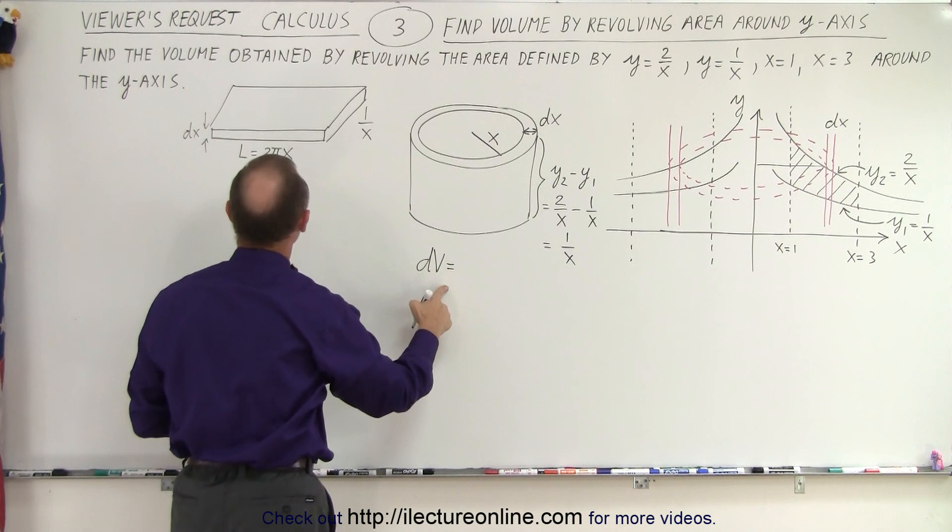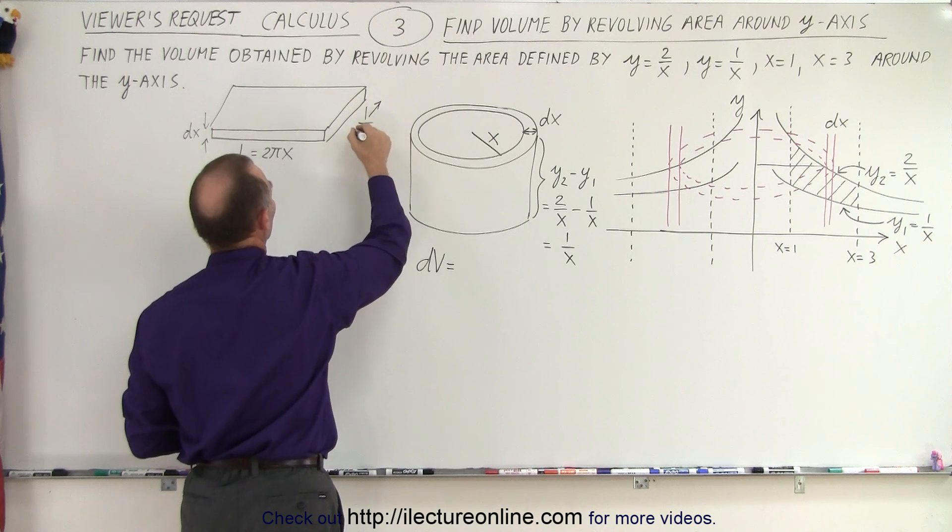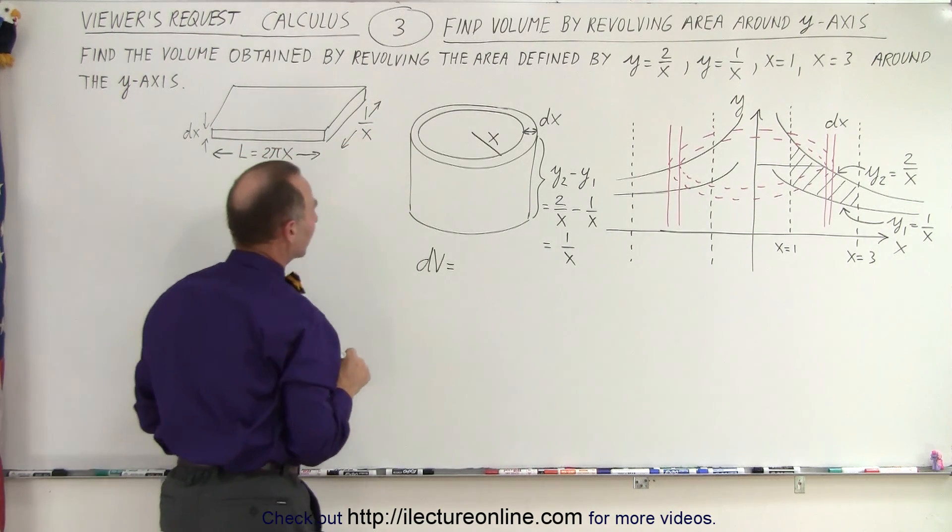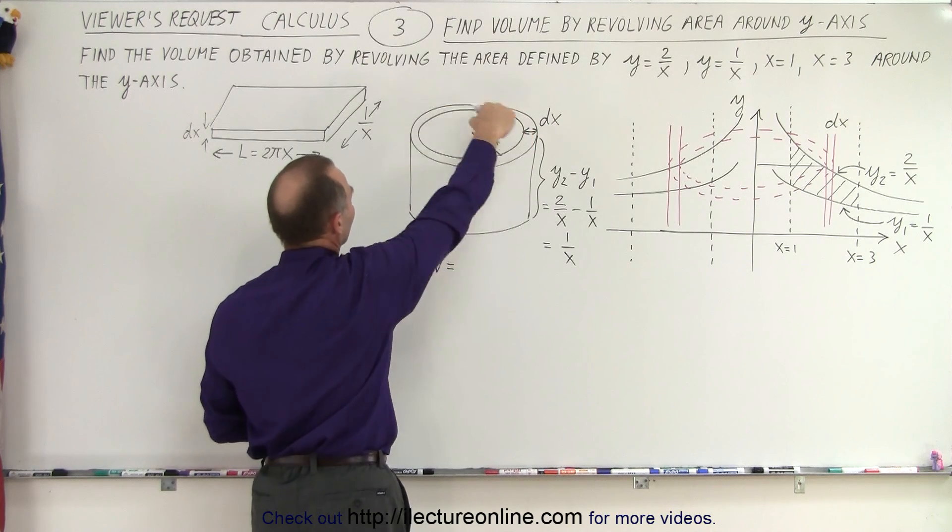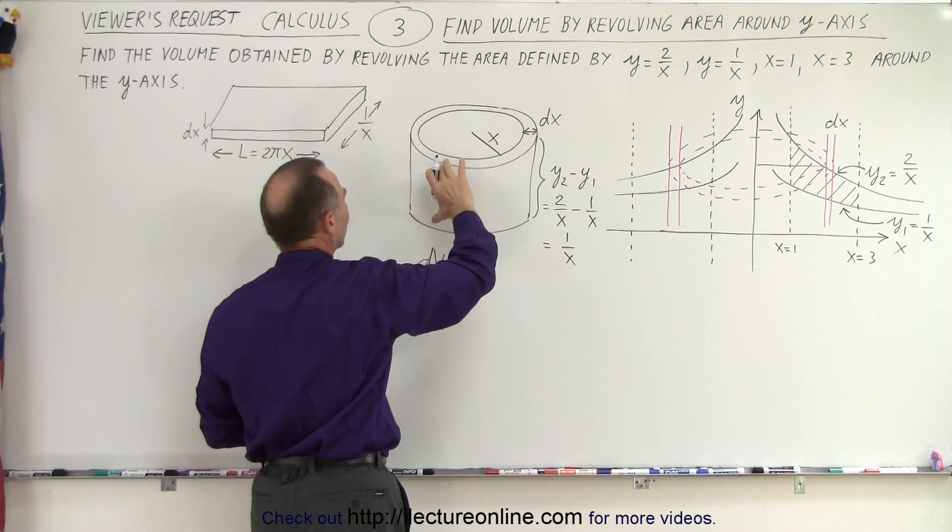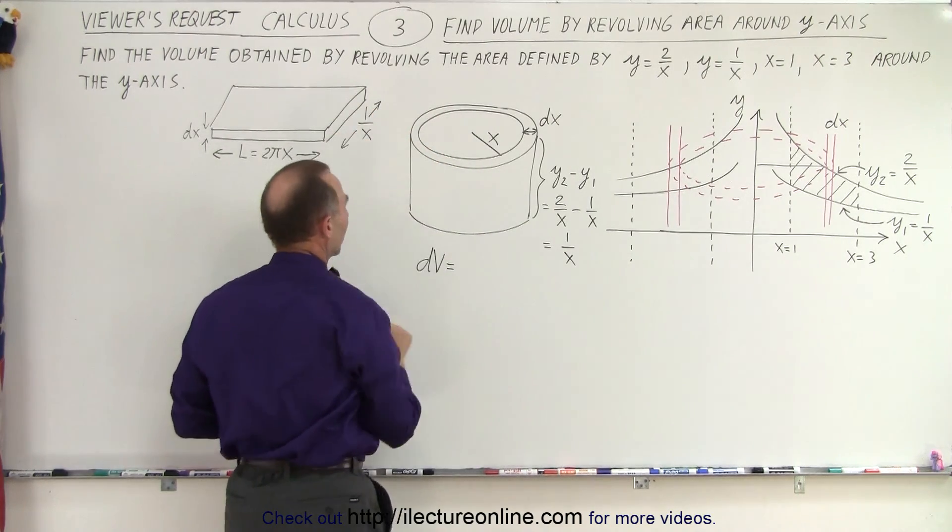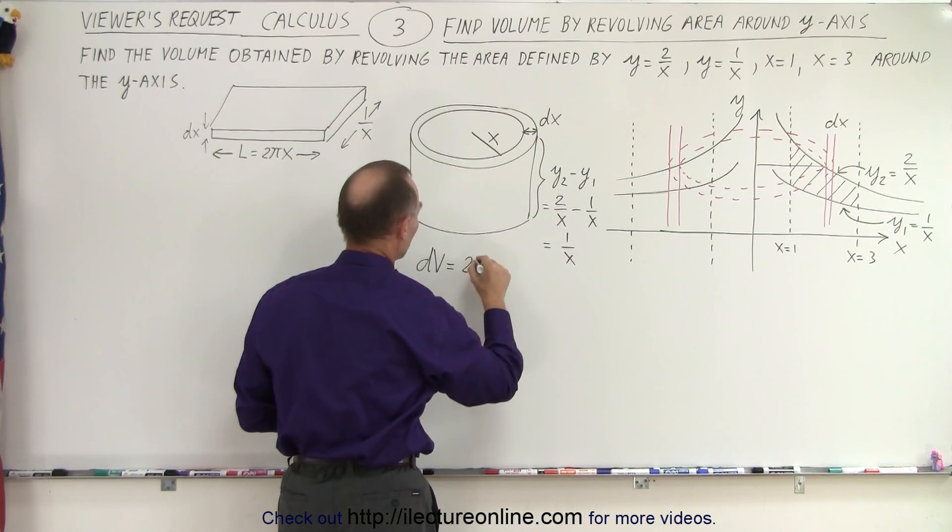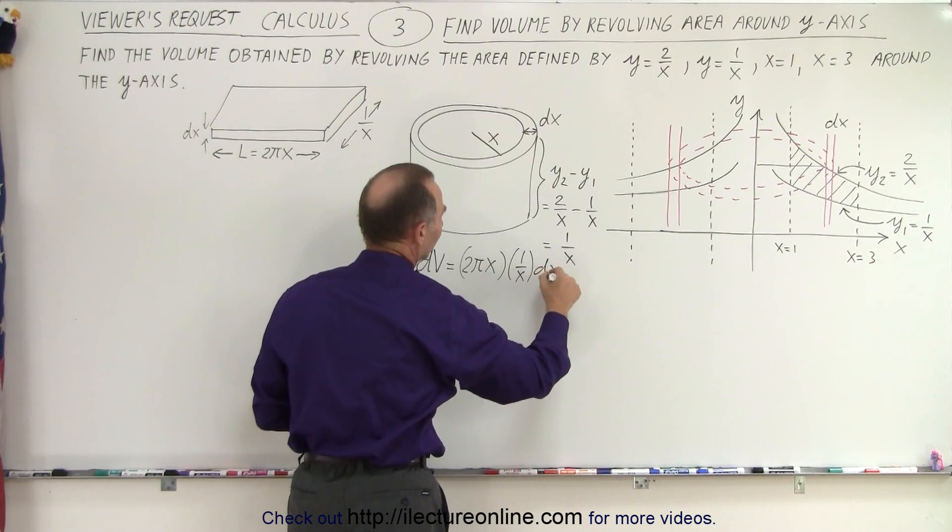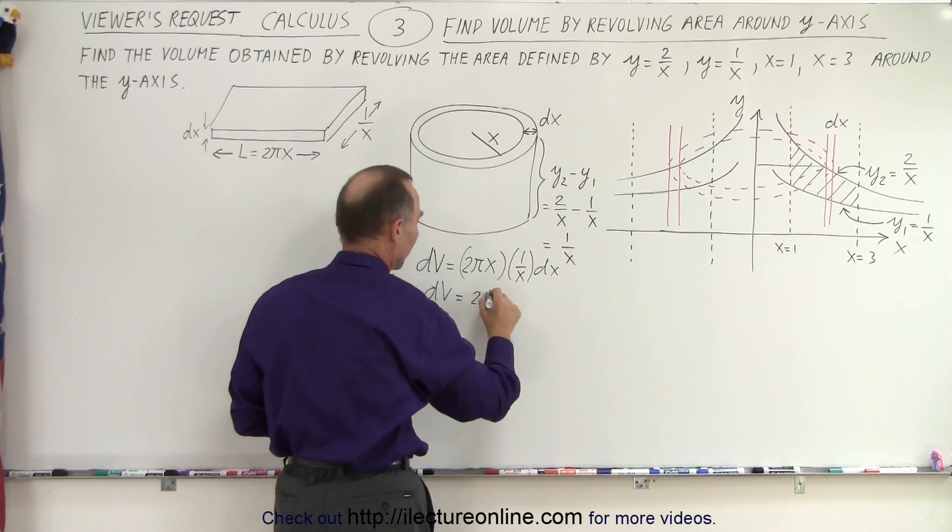So the dV would be equal to the circumference, which is the length, times 1 over x, which is the width. So we could probably put lines like this to give you an idea of what we're talking about. So the circumference of this hollow cylinder is 2π x. The width of the cylinder is really the height right here. The width of this rectangle is really the height right there. And then the thickness dx. So we end up with 2π x times 1 over x times dx. So the dV is equal to, the x's cancel out, 2π dx.